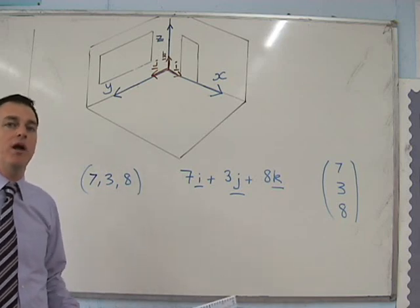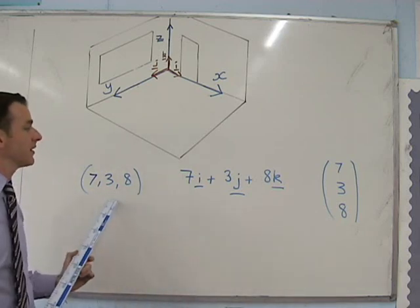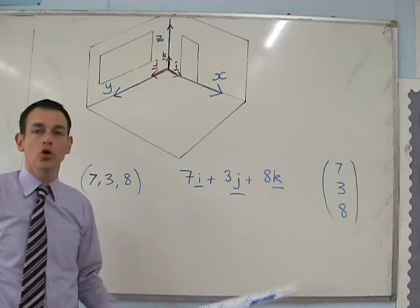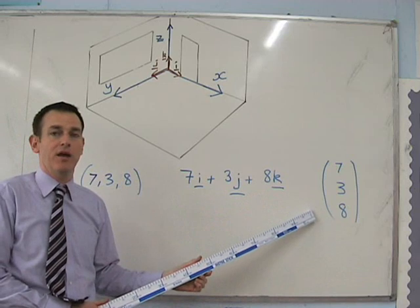We can write vectors in three different ways. We can write them as coordinates, we can write them as i's, j's and k's, or we can also write them as column vectors.